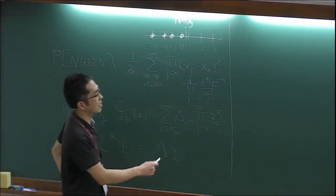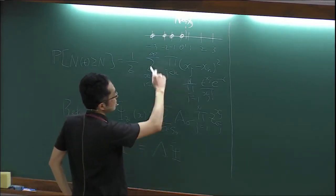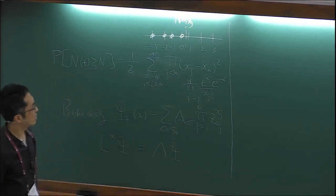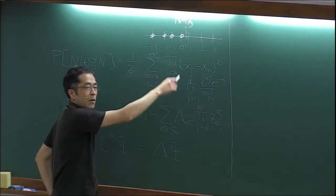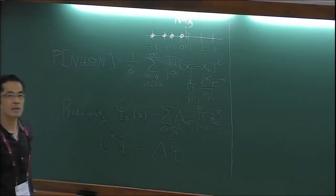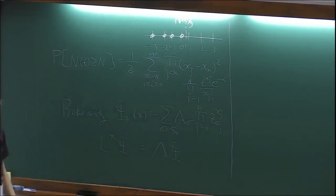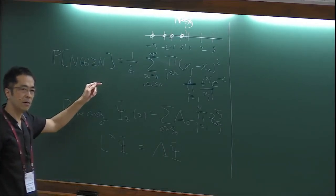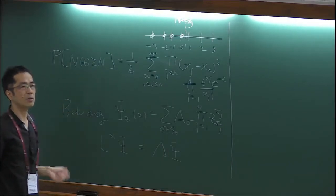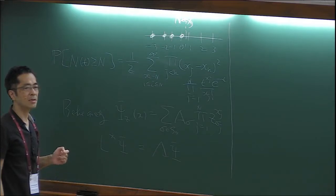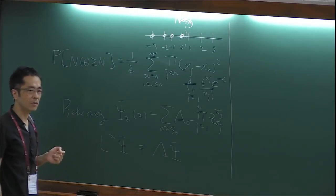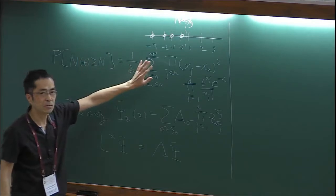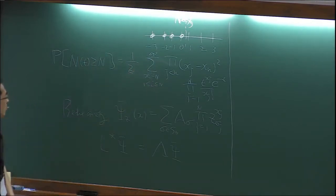As you can see, this part looks very much like a GUE expression. Once we have this formula, we can apply the standard techniques of random matrix theory to study large-time behavior and to get the GUE Tracy-Widom distribution, which is expected to be universal. This is the basic story, and now we want to derive this formula.